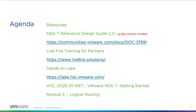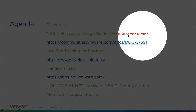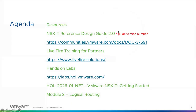On the resources side, the most important thing while going through this — whether you're learning about NSX or using NSX in production — is to always keep a current copy of the NSX-T reference design guide available. Highlighted on this slide is design guide version 2.0 — that is the guide version number, not to be confused with the software version, which is 2.5. This is the current release. When you have questions about any of this stuff, this is your Bible and where you go to get answers.